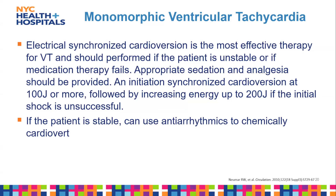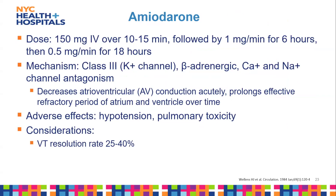If the patient is stable, antiarrhythmic agents can be used to chemically cardiovert. Amiodarone can be used with the same dosing as for AFib — it is a Class 3 antiarrhythmic that blocks potassium channels and also has some beta-adrenergic, calcium, and sodium channel antagonism. It acutely decreases AV node conduction, prolongs the effective refractory period of the atrium and ventricle over time. Key adverse effects include hypotension and pulmonary toxicity, with V-tach resolution in about 25 to 40 percent of cases.